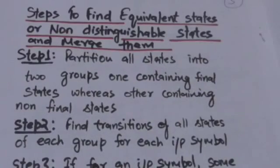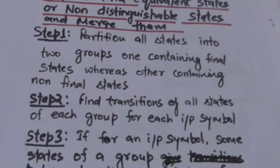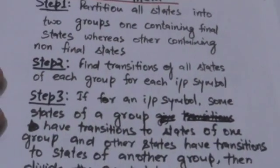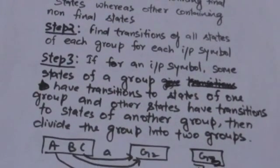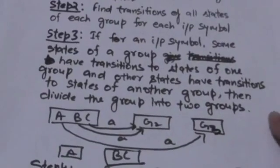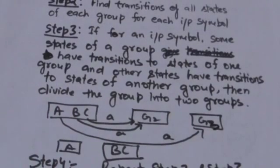Now we will study the steps to find equivalent or non-distinguishable states and merge them. First, partition all states of the DFA into two groups: one group containing final states and another containing non-final states. Then find the transitions of all states in each group for each input symbol. If for some input symbol, some states of a group transition to states of one group while other states transition to states of another group, divide that group into two.